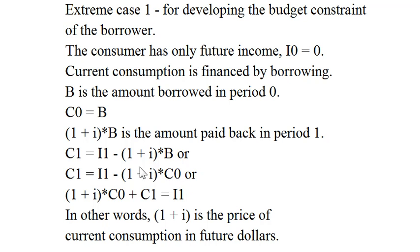Or bringing (1 + i)*C0 over to the other side, (1 + i)*C0 + C1 = I1. In this extreme form (1 + i) is the price of current consumption in future dollars.